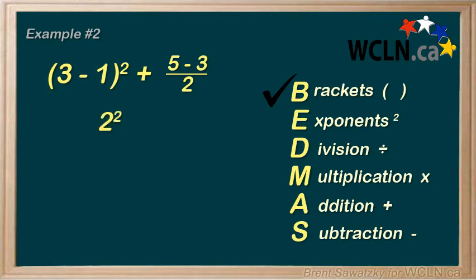But, we also note that we have a fraction here. And when we have something that needs to be cleaned up in the numerator or the denominator of a fraction, we can treat that as though it were in brackets. So, our 5 minus 3 can be treated as part of our bracket step. And 5 minus 3 is 2, and so we have 2 over 2.